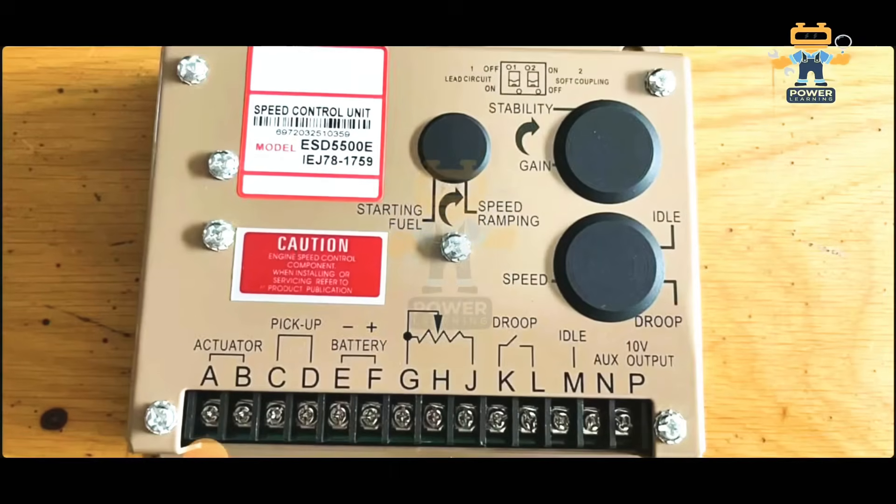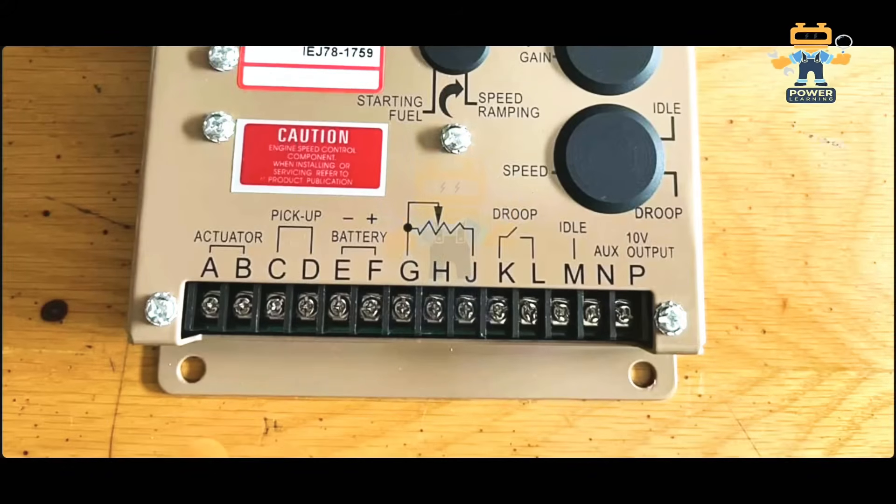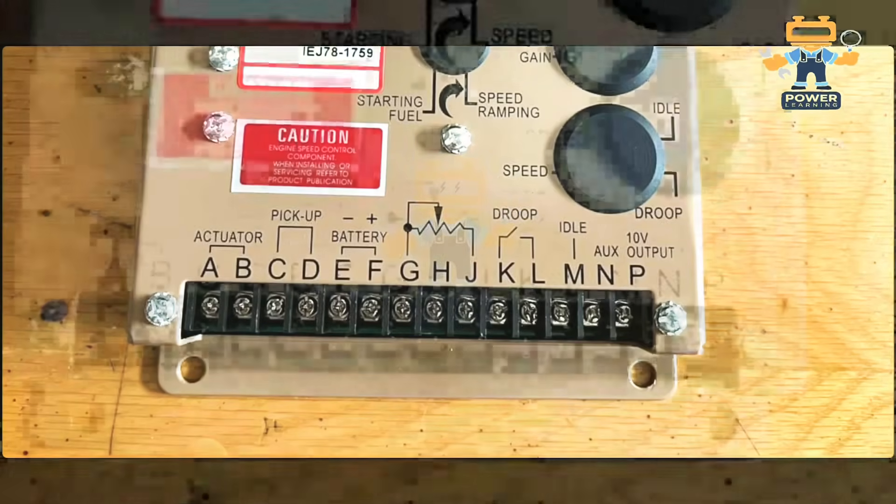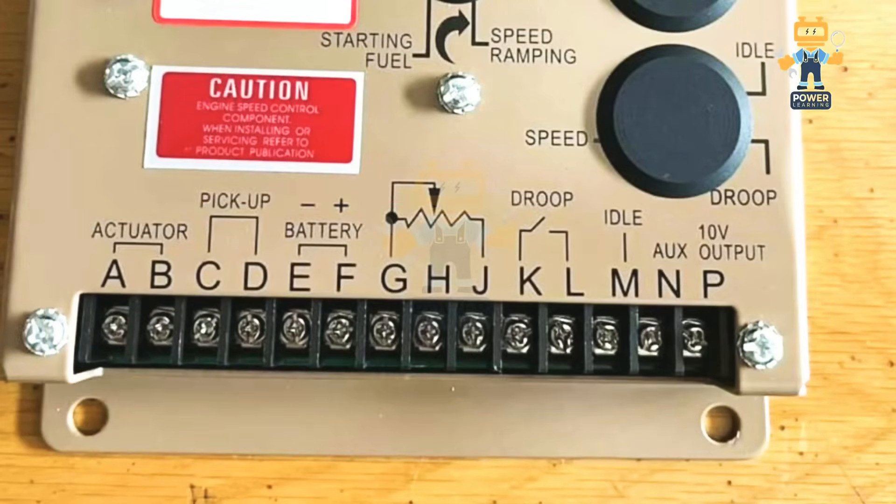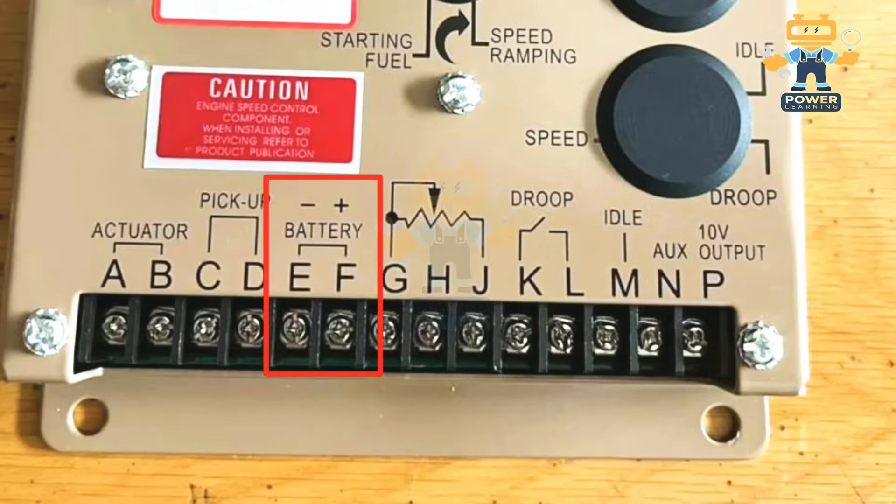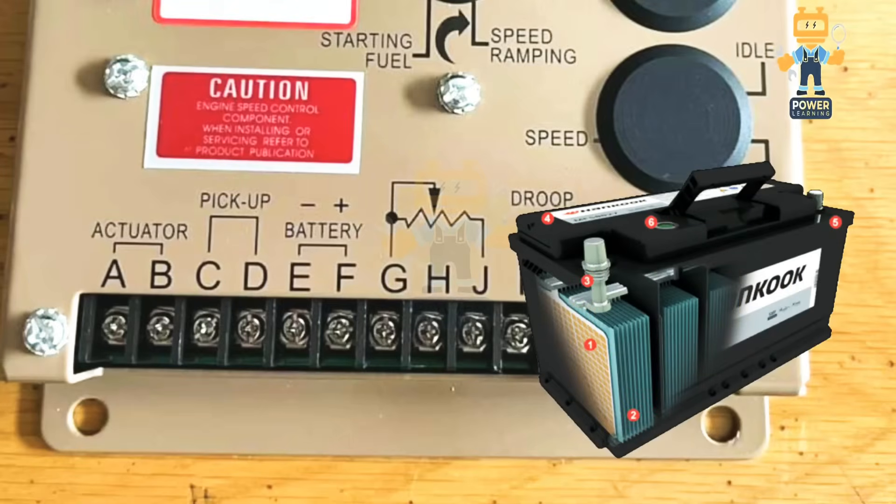First of all, it's written actuator - so actuator is terminal A and B. Pickup is terminal number C and D. Battery positive and negative is E and F. First, whenever we are connecting this controller, we have to give power supply to power it up. You will connect 12 volt or 24 volt to this controller on battery positive and battery negative terminals.